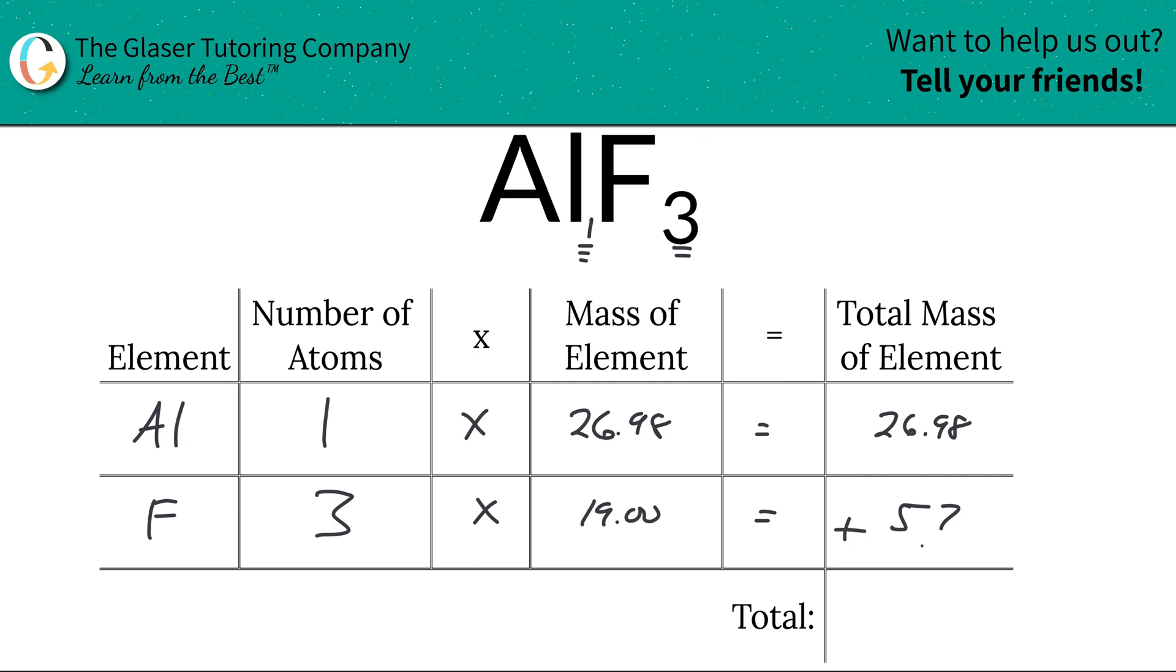And then all we have to simply do is add this column together to find out the total mass of the entire compound. So when we add those two values together, we get a value of about 83.98.